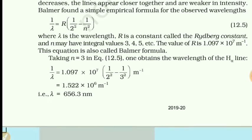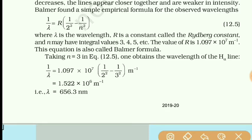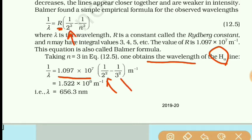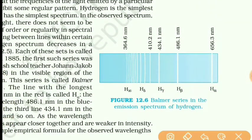Here the calculation is shown: Rydberg's constant has value 1.09 × 10⁷. If you want to find the wavelength of the first line, that is H-alpha, then in place of n put 3 — for H-beta it is 4, for H-gamma it is 5. Calculating this and obtaining the wavelength for H-alpha with n = 3, you will get λ = 656.3 nm, and you can see that for H-alpha the wavelength is written as 656.3 nanometers.